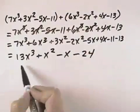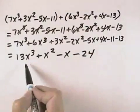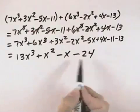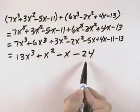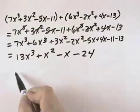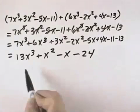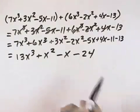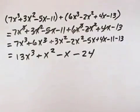Now, double-checking: I have a cubed term, a squared term, a first-degree term, and a constant term. There are no more like terms, and therefore this has now been simplified as far as possible.